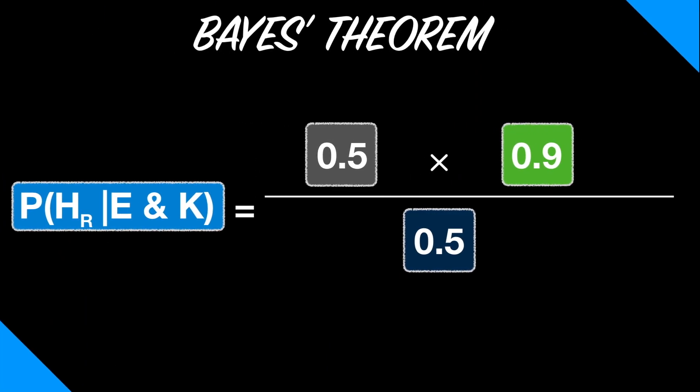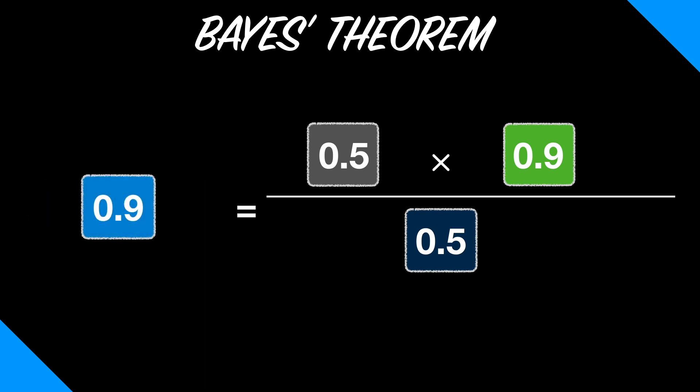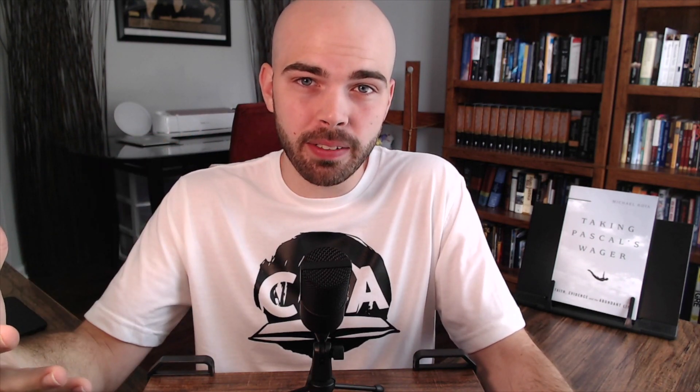Plug that answer back into Bayes' Theorem, and you find that the posterior probability is point nine or nine tenths. So, your intuition was correct. Drawing a red marble gave you reason to think that you probably picked from the vase with mostly red marbles. Now though, we're able to make that hunch much more precise. You should have a 90% level of confidence in the hypothesis, HR, that you drew from the vase with mostly red marbles, given your evidence and background knowledge.